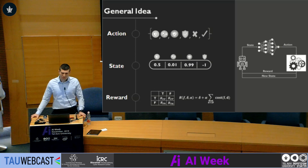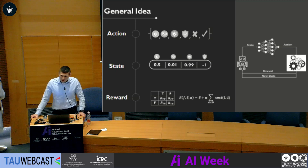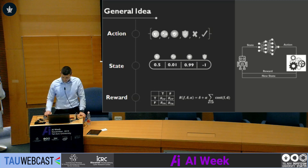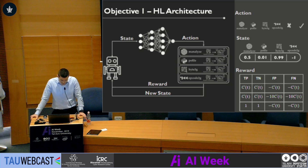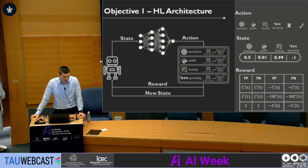The reward function we use is a confusion matrix-based function that tells us the actual reward for every type of correct or incorrect classification made. The reward function depends on three variables: first, the cost function, which accumulates the time required by all detectors to classify the file; this cost is multiplied by alpha, which represents the relation between the reward function and the cost function; and delta, a constant value used when alpha equals 0, for cases where we don't want any relation between the cost function and the reward function.